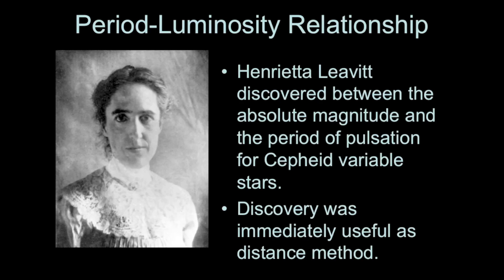In the early 20th century, an astronomer named Henrietta Leavitt was studying Cepheid variable stars, and she found a direct relationship between the absolute magnitude or luminosity of a Cepheid variable and its period of pulsation. This was immediately a useful piece of information that astronomers could use to determine the distances to these stars. Cepheid variables are so bright that we can see them even in some of the nearby galaxies to the Milky Way.